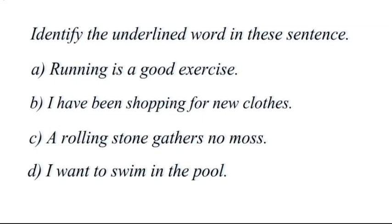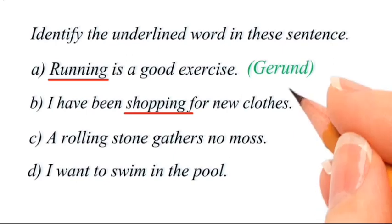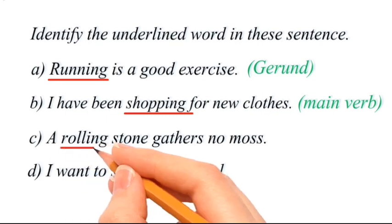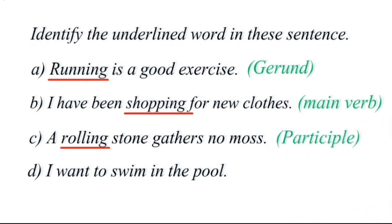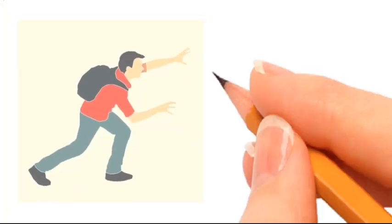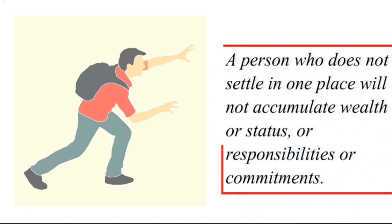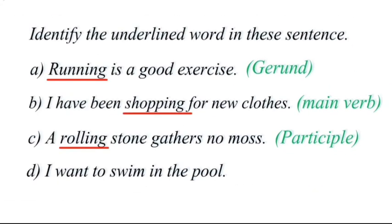'Running is a good exercise' — the underlined word is 'running,' and we call it a gerund. 'I have been shopping for new clothes' — 'shopping' is a present participle verb. 'A rolling stone gathers no moss' — 'rolling' is a participle. It refers to a person who does not settle in one place and never accumulates wealth or status. 'I want to swim in the pool' — 'to swim' is an infinitive.